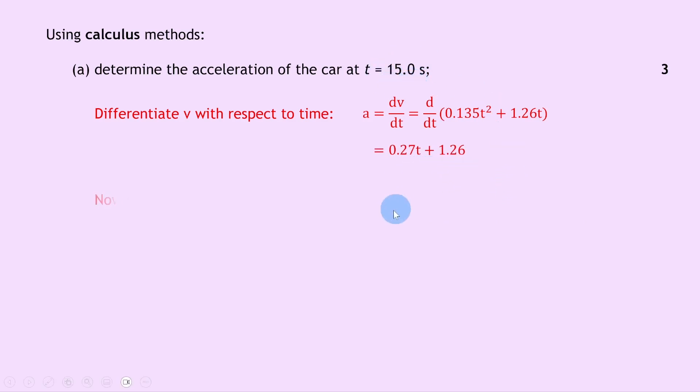Because we're given a time value here, we can now substitute the time value into this expression for the acceleration. So we have a equals 0.27 times 15.0 plus 1.26, and putting that into your calculator should give you an answer of 5.31 meters per second squared.